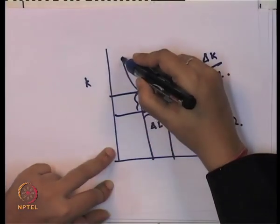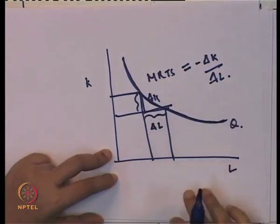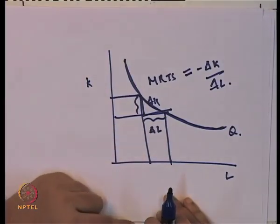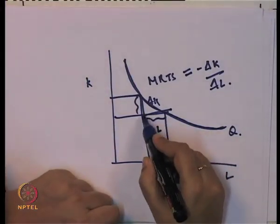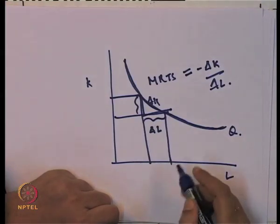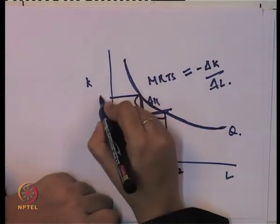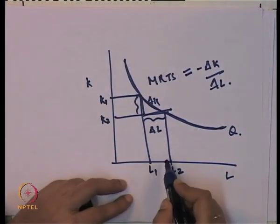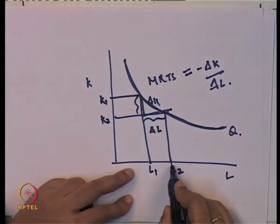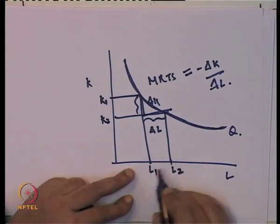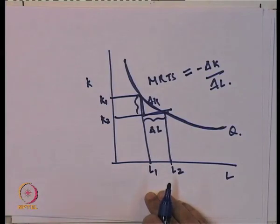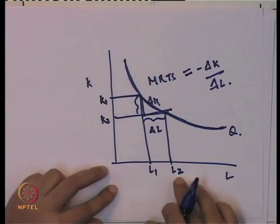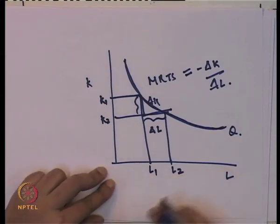This leads to one more property of the isoquant: the isoquant is always downward sloping. Because whenever we have to increase one input — say from L₁ to L₂ — there is a decrease in the other input from K₁ to K₂. Conversely, when increasing from K₂ to K₁, the labour amount must decrease from L₂ to L₁. You cannot increase one input without decreasing the other.